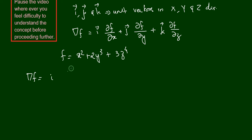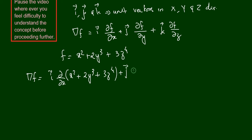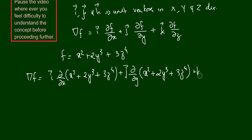So del f is equal to i times ∂/∂x of (x² + 2y³ + 3z⁴), plus j times ∂/∂y of (x² + 2y³ + 3z⁴), plus k times ∂/∂z of (x² + 2y³ + 3z⁴).